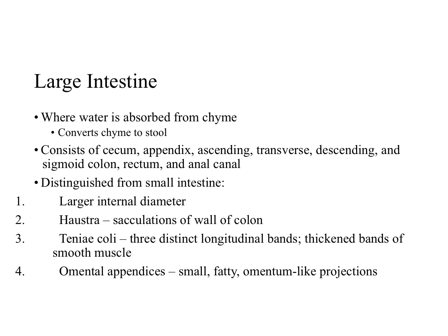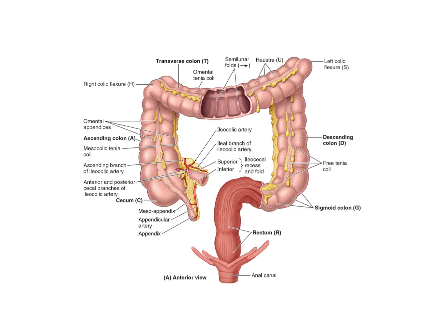The tenia coli are thickened bands of smooth muscle and they run the length of the large intestine. These muscles have a tonic contraction, meaning they are contracted even at rest, that shorten the part of the wall of the intestine they're associated with, so the colon becomes sacculated or baggy between the tenia where they're contracted, forming what's called the haustra. This diagram illustrates the tenia, the haustra, and the fatty omental appendices, which are characteristic of the colon and are not associated with the rectum.